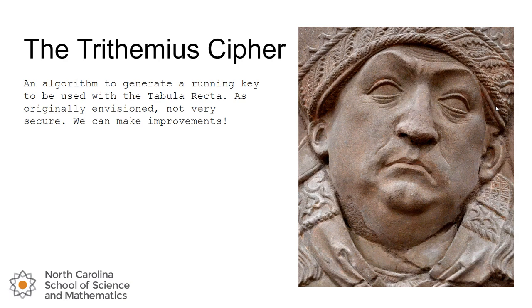In a previous lesson we mentioned that Johann Trithemius was the first person to really put out the idea of the tabula recta, and as such he had some thoughts about how to generate the running key you could use along with it. As originally envisioned by Johannes himself, it's not very secure, and we'll see why in just a moment. But we're going to look at ways we can make a few improvements along the way.